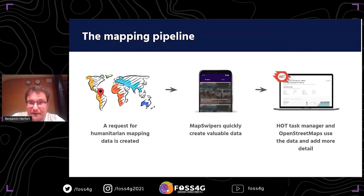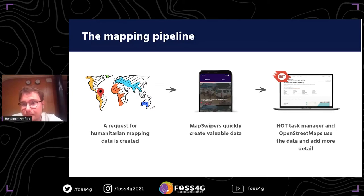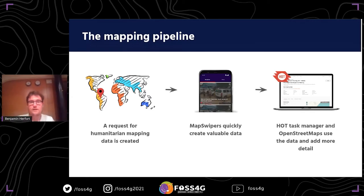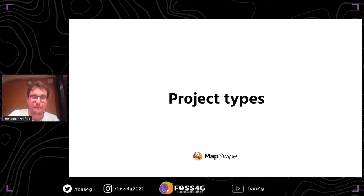The mapping pipeline always starts with requests from a humanitarian organization setting up a project - defining an area that needs mapping. This goes into the app where you can pick from several projects, each with a short story about why this matters and which organization you help. The results go either into the HOT Tasking Manager, a tool that helps mapping in OpenStreetMap, or can be used directly. MapSwipe is kind of the pre-step - filtering the area for specific mapping - and then the buildings get added to OpenStreetMap.